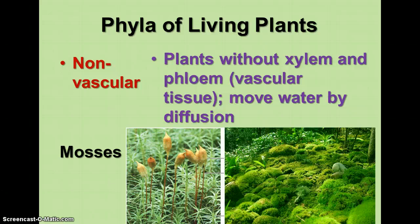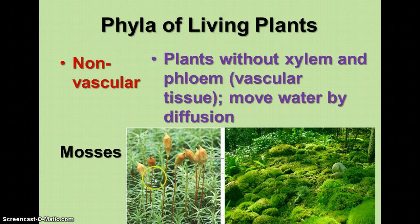The non-vascular plants we'll focus on are mosses. Mosses are found in cool, damp places in parks and even in your yard — usually very bright green, very small, about a quarter to a half an inch tall. The green part is the gametophyte, and the brown stalk with a pod on top is the sporophyte, where spores are produced in the capsule. We'll look at mosses in lab in a couple of days.